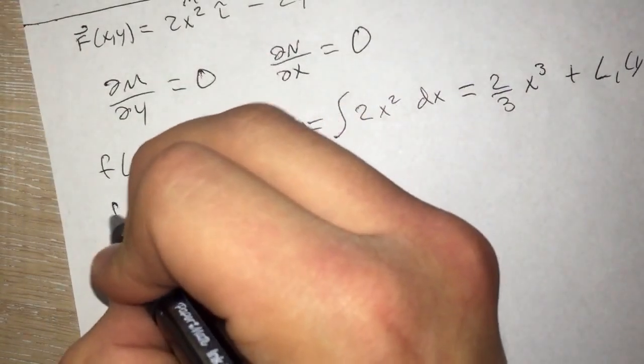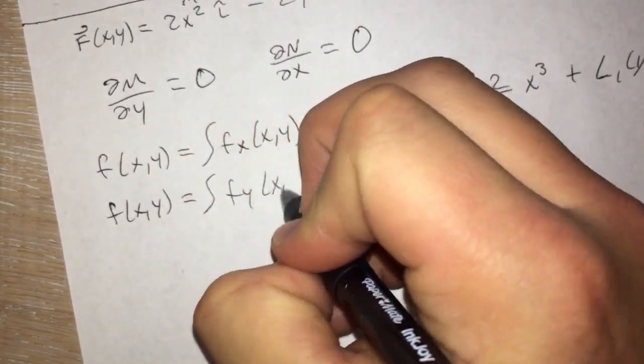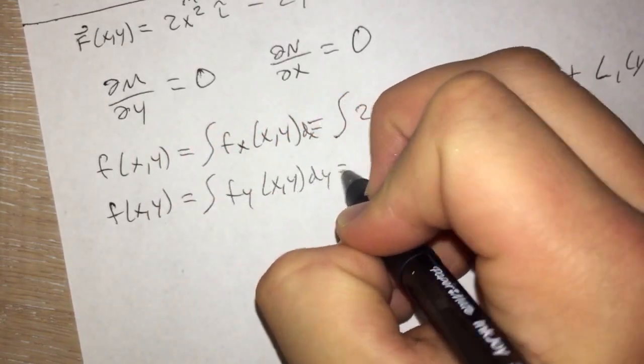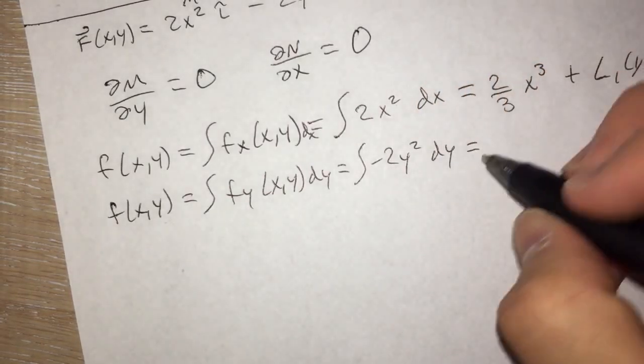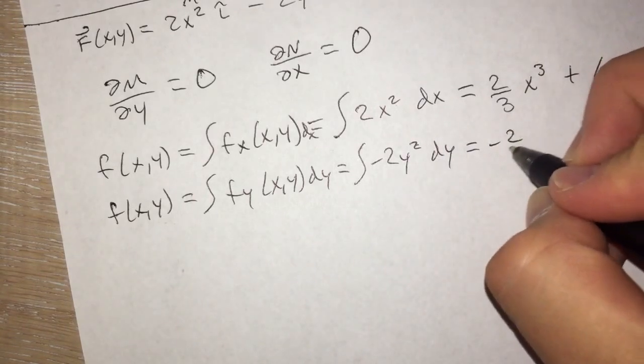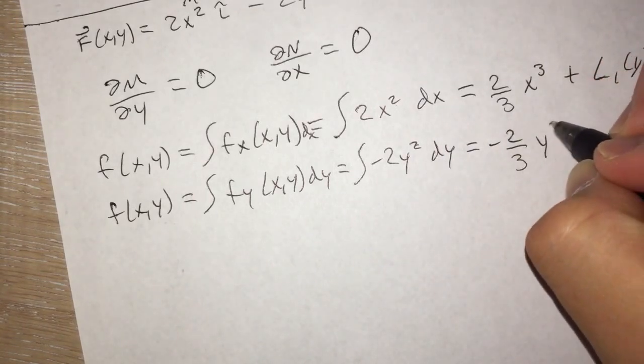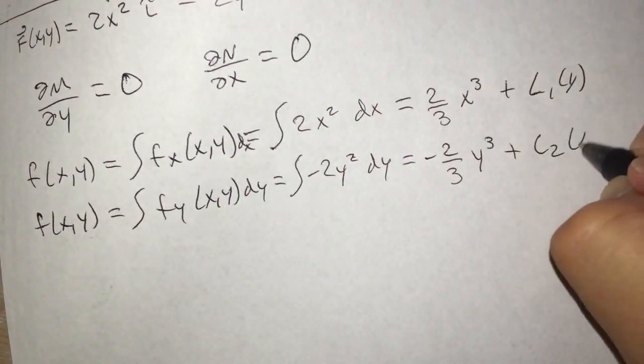Then we will move on to the next step where we take the integral of fy of xy dy, which is equal to the integral of -2y² dy. Which then if we raise the power of y and divide by 3 again, we'll end up with a -(2/3)y³ plus, and don't forget the c₂ of x.